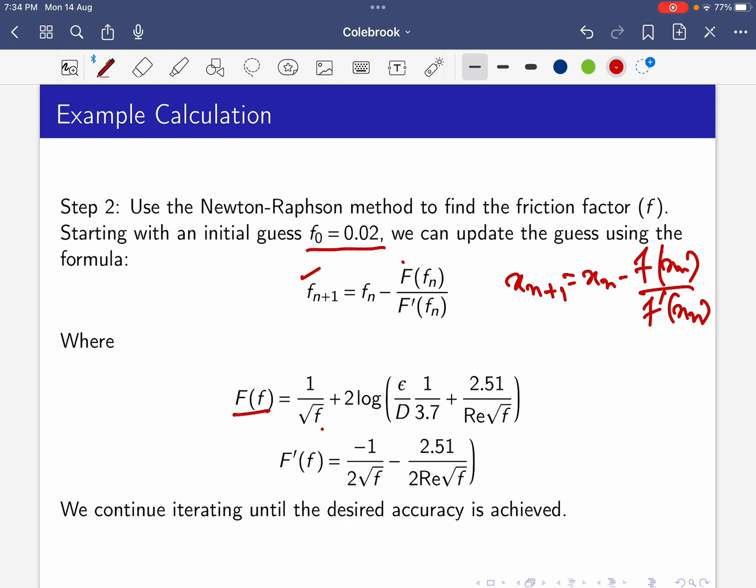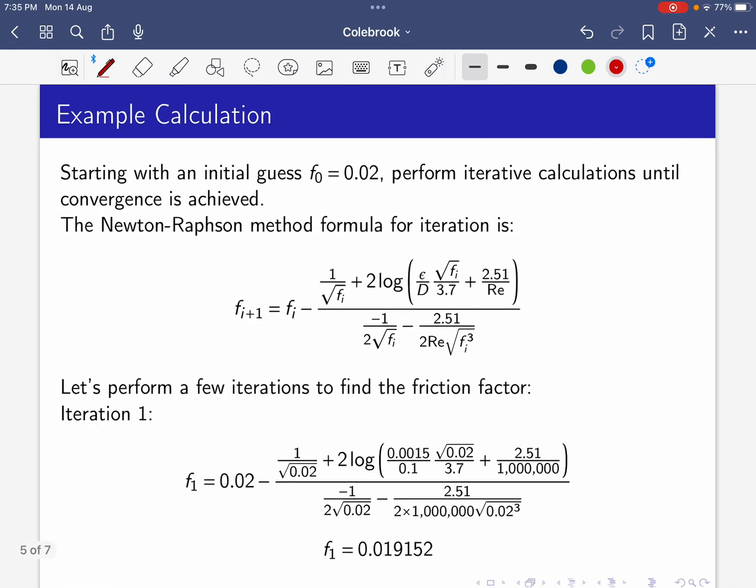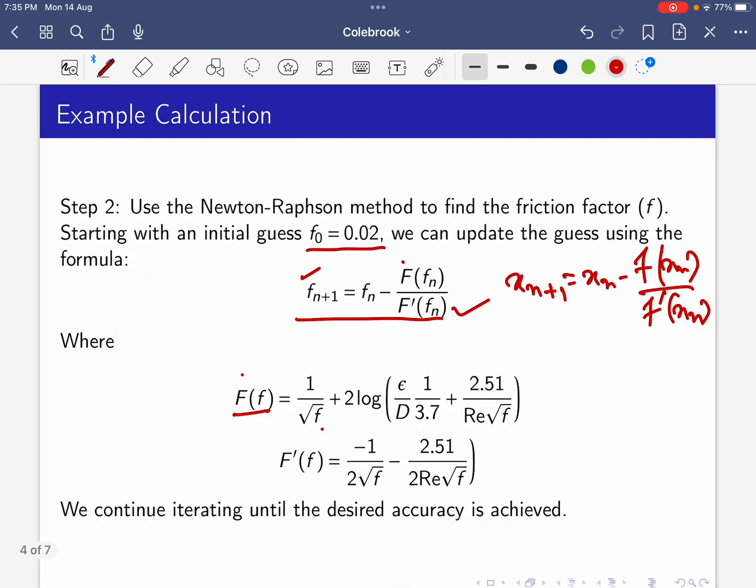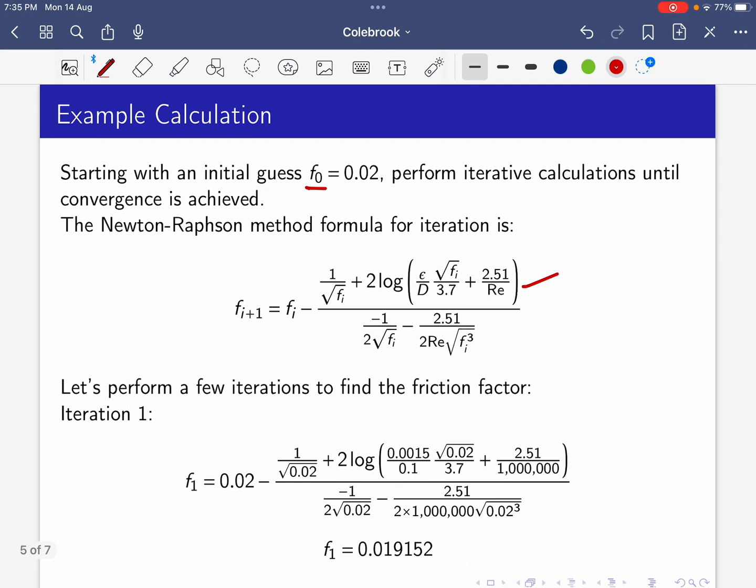We already know F(f) and F'(f). Using Newton-Raphson method, we need the function form and then the derivative. We already have both. Now assuming f₀ = 0.02, we perform iterative calculations until convergence is achieved using f_{i+1} = f_i - F(f_i)/F'(f_i).